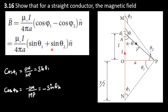From the expression, cos phi 1 is equal to adjacent side divided by hypotenuse.